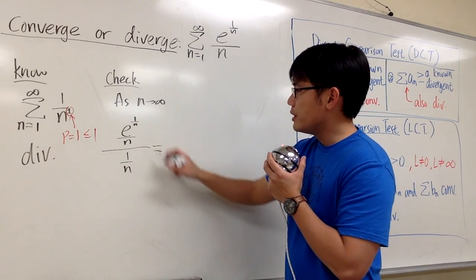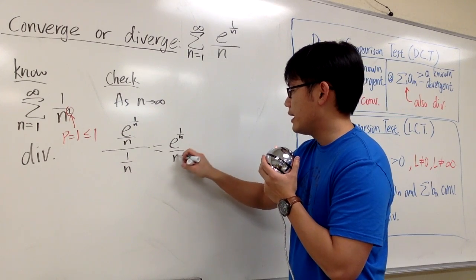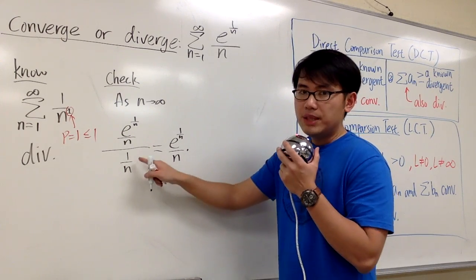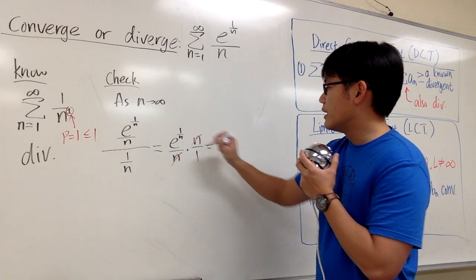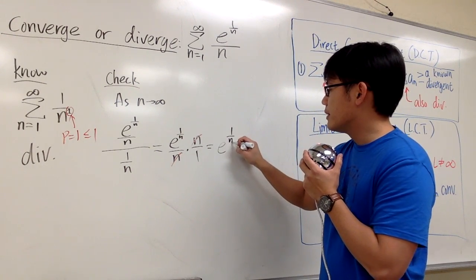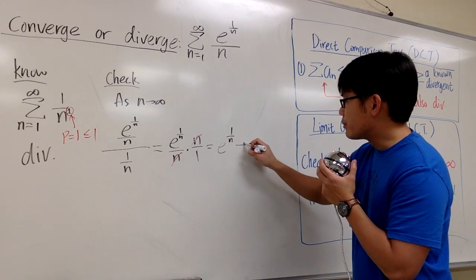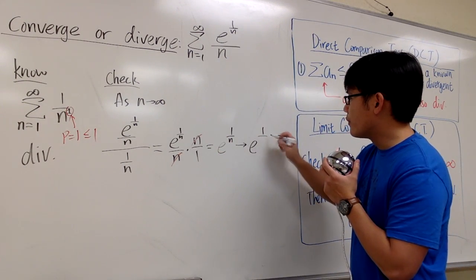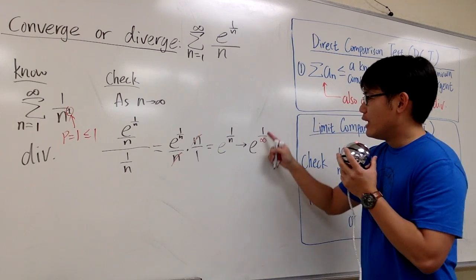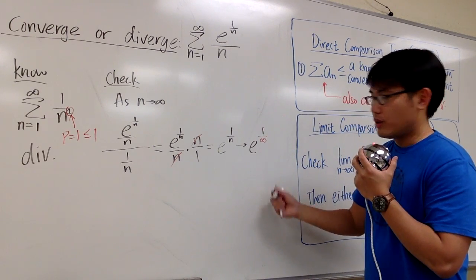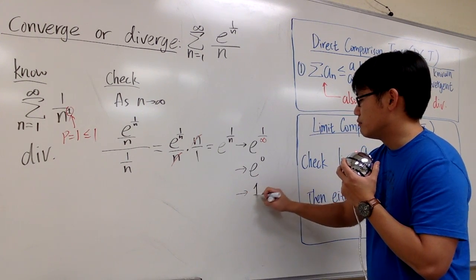Let's do some algebra. We have e to the 1 over n over n, times we flip the bottom, which is n over 1. The n's cancel out, leaving e to the 1 over n. As n approaches infinity, this approaches e to the 1 over infinity. Since 1 over infinity is 0, this approaches e to the 0, which equals 1.